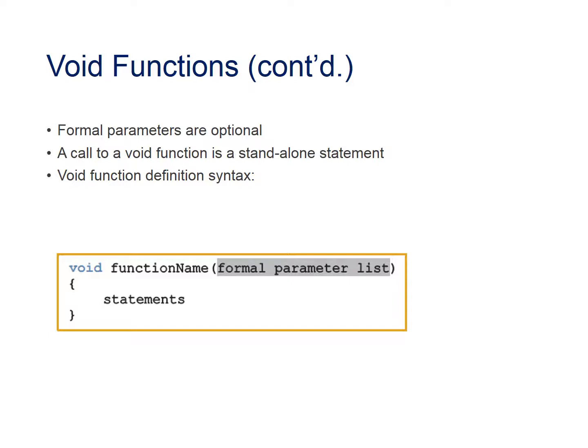In void functions, formal parameters are optional. A call to a void function is a stand-alone statement. The void function definition syntax is the reserved word void, followed by the function name, then the formal parameter list, and finally the statements.